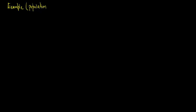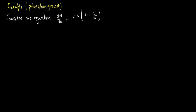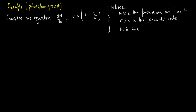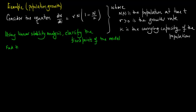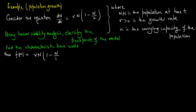Consider an example from population growth: dn/dt = rn(1 − n/K), where n(t) is the population at time t, r > 0 is the growth rate, and K is the carrying capacity. Using linear stability analysis, we wish to classify the fixed points of this model and find the characteristic time scale. Here f(n) = rn(1 − n/K), so the fixed points are n* = 0 and n* = K.